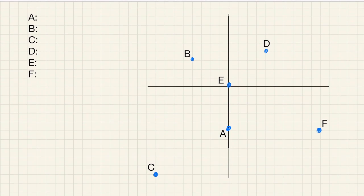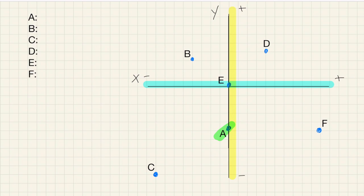Let's go ahead and start by preparing our graph. We have the y-axis and the x-axis, and I'm labeling positive and negative to help orient ourselves. Starting with point A — it's right here. We start at 0, 0 and we did not go left or right, so the x value is 0. We are going down, so that's negative — negative 1 through 5 — negative 5. So point A is 0, negative 5.